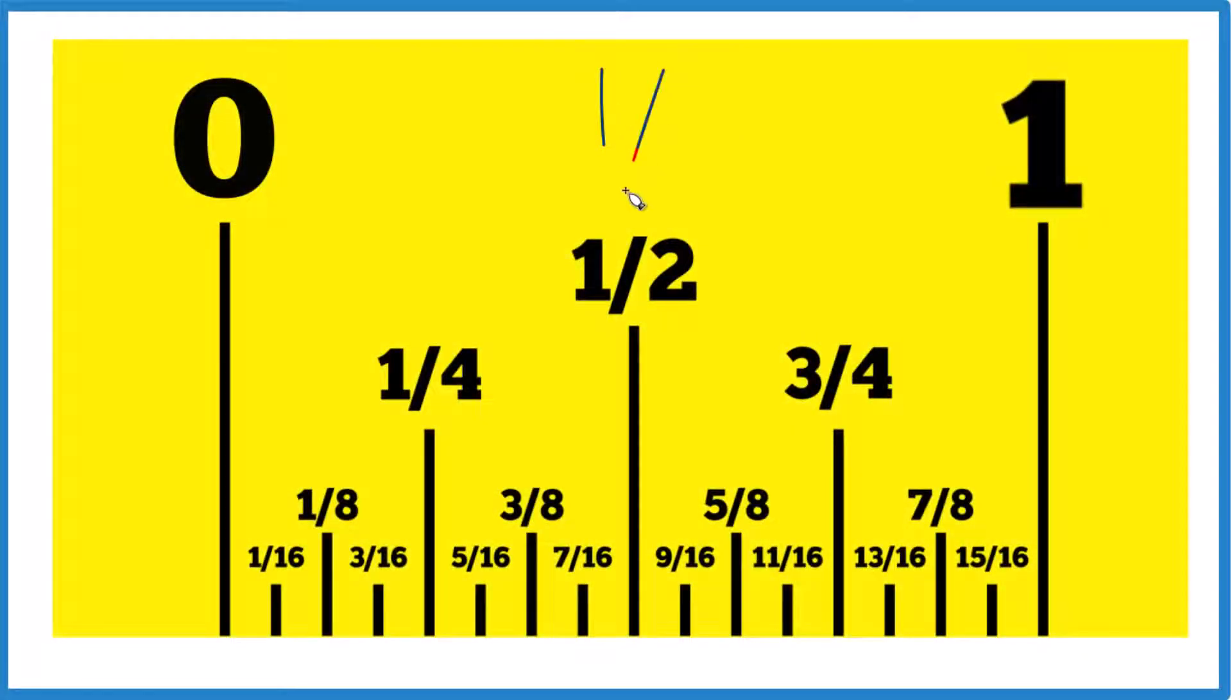Here's how you find one eighth on a ruler or a tape measure. So we're looking for one eighth. We have zero to one, so the whole thing is one.